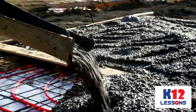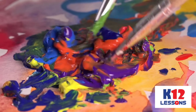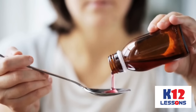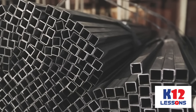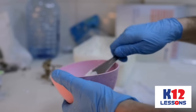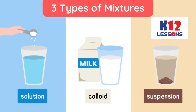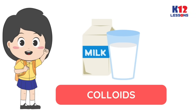Nowadays we have created a lot of mixtures from food, medicine, and even industrial materials. A variety of products are made up of different mixtures. There are three different types of mixtures: solutions, colloids, and suspensions. In this lesson we will learn about colloids.